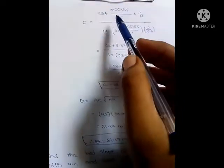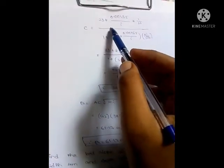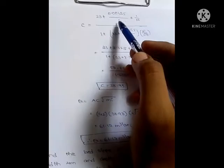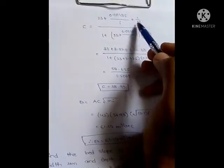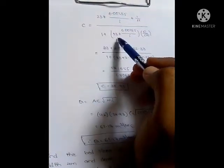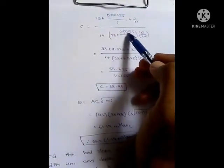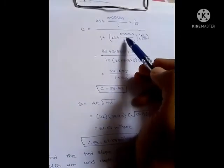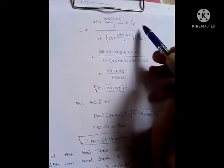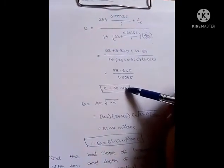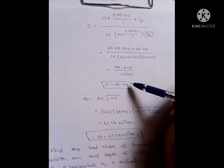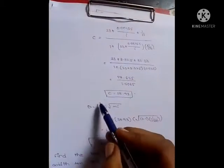According to Kutter's formula: C equals (23 plus 0.00155/i plus 1/n) divided by (1 plus (23 plus 0.00155/i) into n divided by √m). After substituting, C value comes to 38.93.